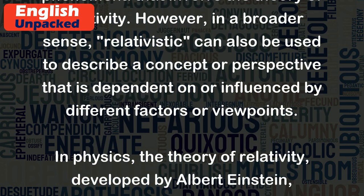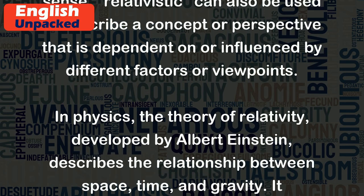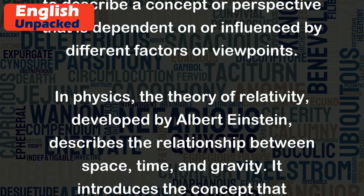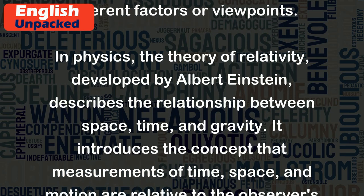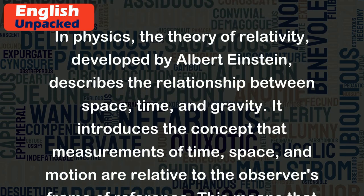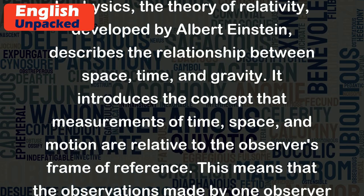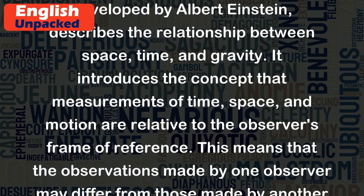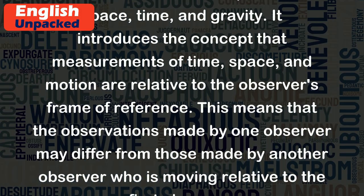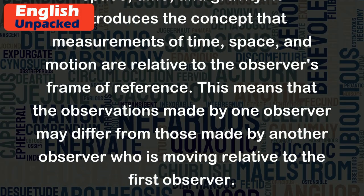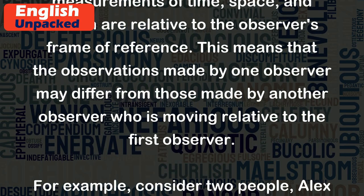In physics, the theory of relativity, developed by Albert Einstein, describes the relationship between space, time, and gravity. It introduces the concept that measurements of time, space, and motion are relative to the observer's frame of reference. This means that the observations made by one observer may differ from those made by another observer who is moving relative to the first observer.